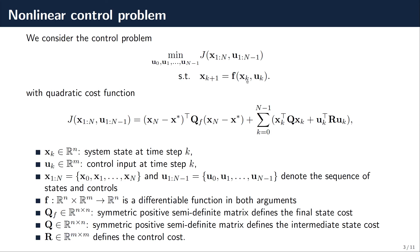The control problem we consider is the standard control problem where we try to find a sequence of controls — in discrete time — that minimizes a quadratic cost function J, which has a terminal constraint and a running cost, subject to the dynamic constraint imposed by the system itself. We use the usual notation where X_k is the state at time step k, U_k is the control, and F is a function differentiable in both arguments. Q is a symmetric positive definite matrix that penalizes the state, and R penalizes the control.